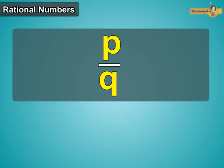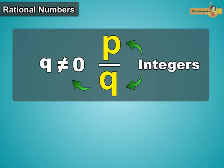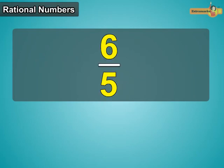A rational number can be defined as a number which can be expressed in the form P upon Q where Q is not equal to 0 and P and Q are integers. Thus, 6 upon 5 is a rational number. Here P is equal to 6 and Q is equal to 5.